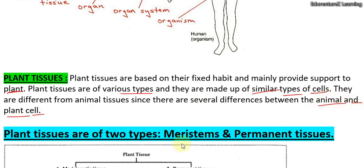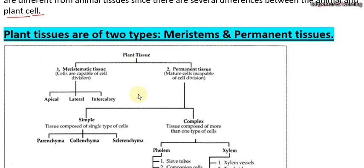Now, what are the types of plant tissues? Plant tissues are of various types. Basically, plant tissues, based on their location or presence, are of two types: meristematic and permanent.